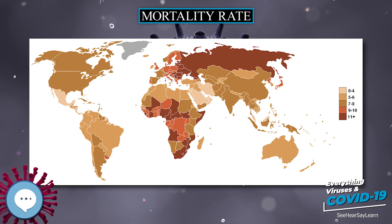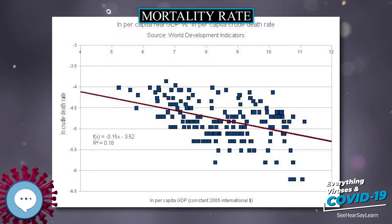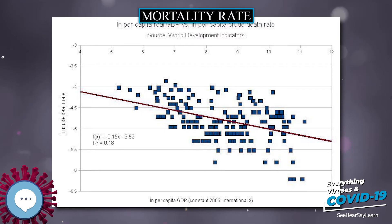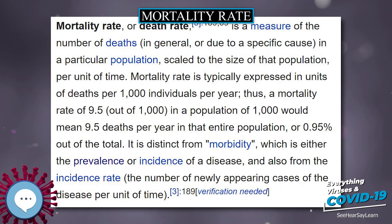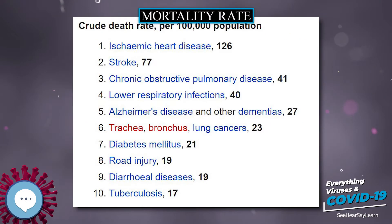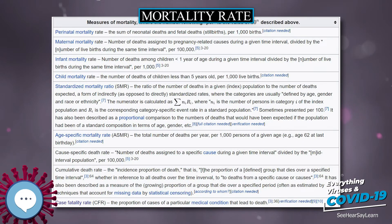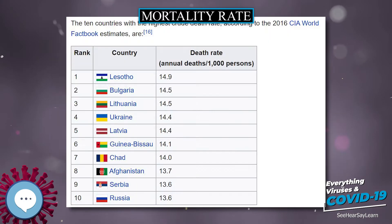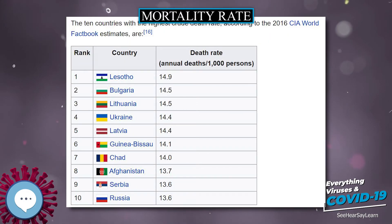Mortality rate, or death rate, is a measure of the number of deaths in general or due to a specific cause in a particular population, scaled to the size of that population per unit of time. Mortality rate is typically expressed in units of deaths per 1,000 individuals per year. Thus a mortality rate of 9.5 out of 1,000 in a population of 1,000 would mean 9.5 deaths per year in that entire population.